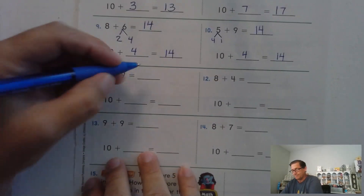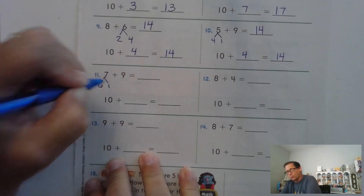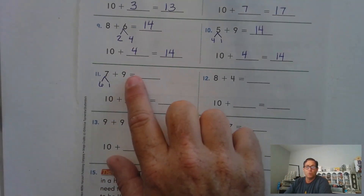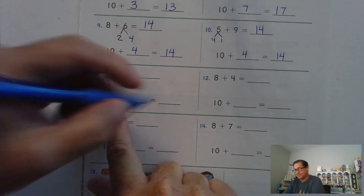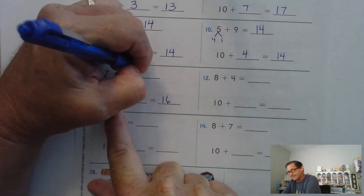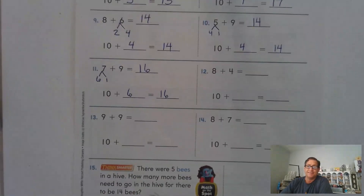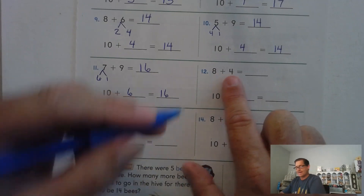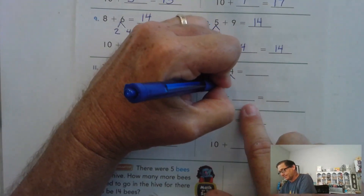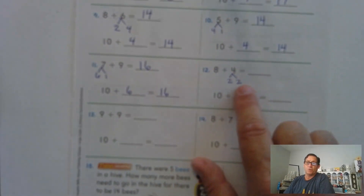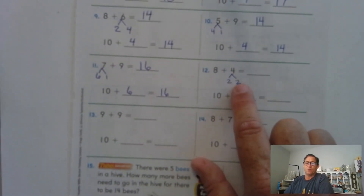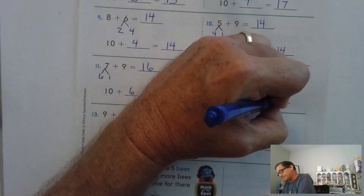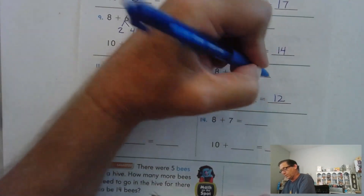Seven plus nine equals what? Let's break the seven into six and one — why? Because I only need one more to add to the nine to get a 10. 10 plus six is 16. So seven plus nine is 16. Eight plus four equals what? How many do we add to eight to get 10? Two. So four can be broken up as two and two. Eight plus two is 10, plus the other two is 12. So eight plus four is 12.